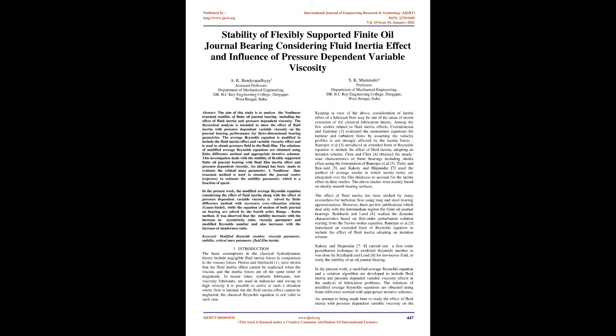In the present work, the modified average Reynolds equation considering the effect of fluid inertia along with the effect of pressure-dependent variable viscosity is solved by the finite difference method with successive over-relaxation scheme and Gauss-Seidel, while the equations of motion of both journal and bearing are solved by the fourth-order Runge-Kutta method. It was observed that the stability increases with the increase in eccentricity ratio, viscosity parameter, and modified Reynolds number, and also increases with the increase of slenderness ratio.